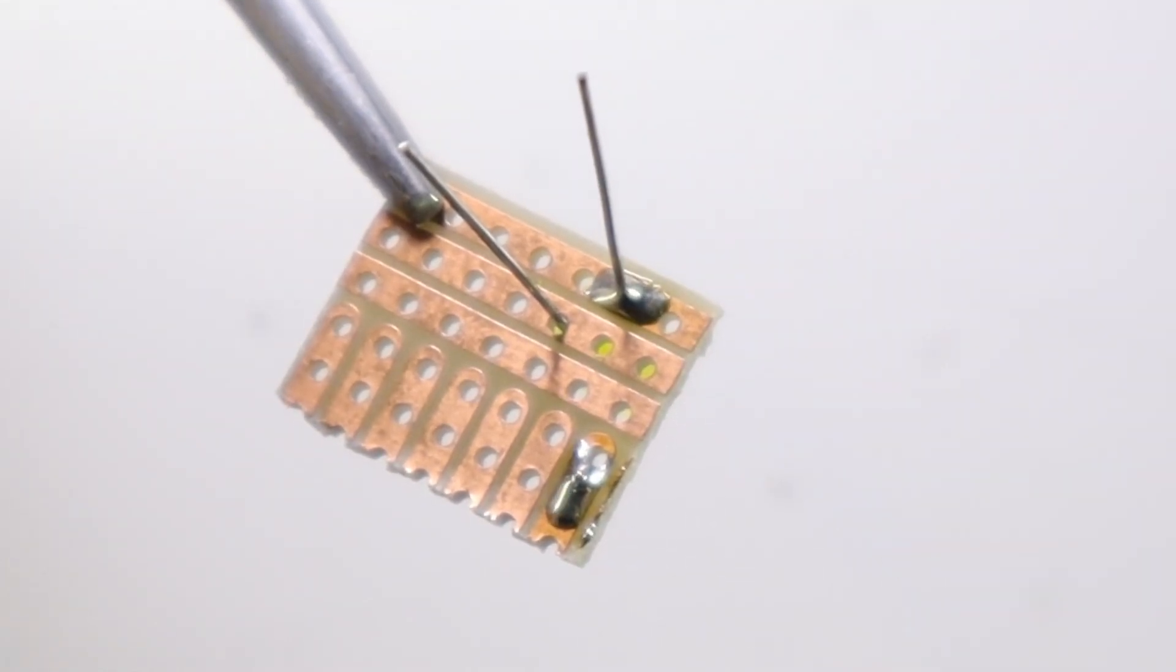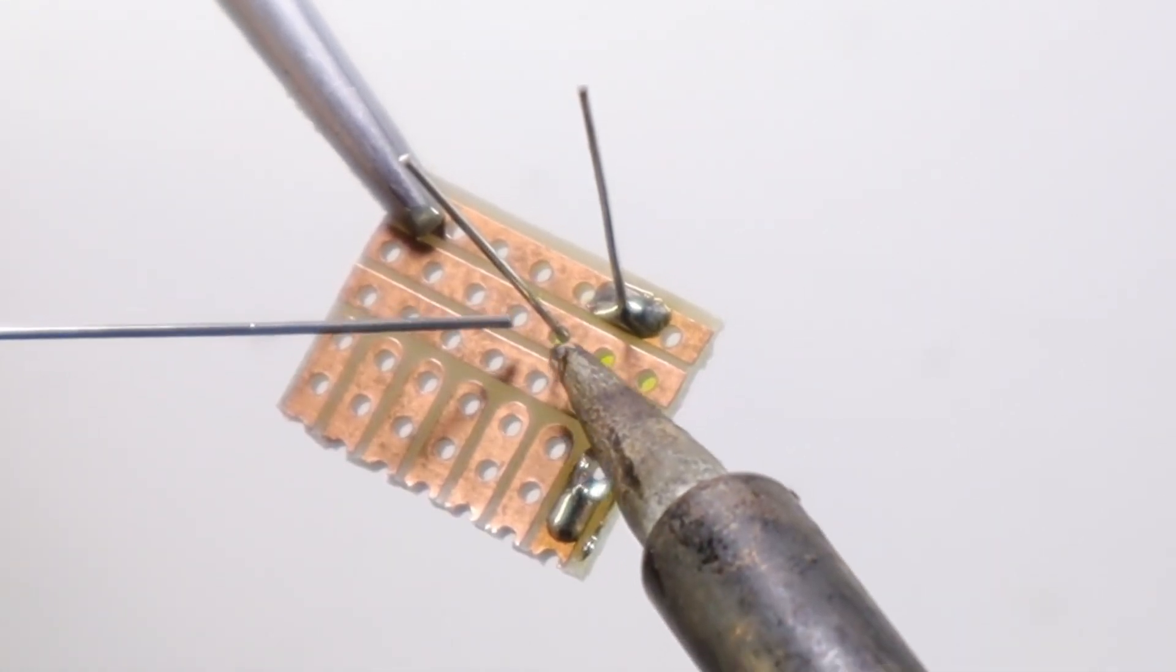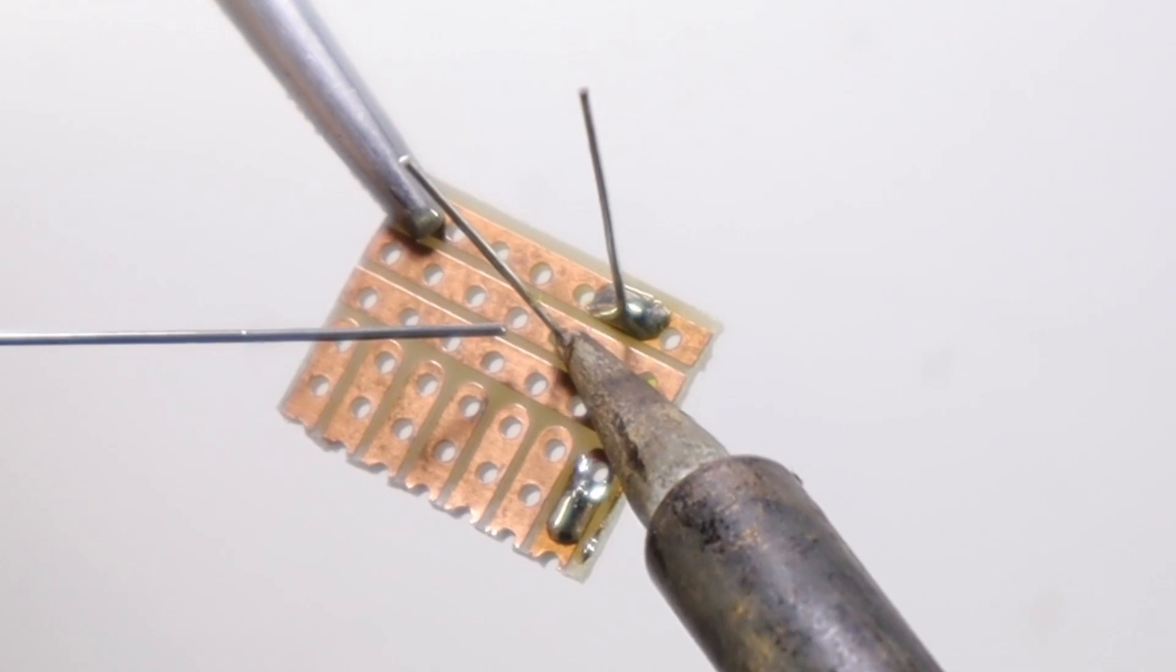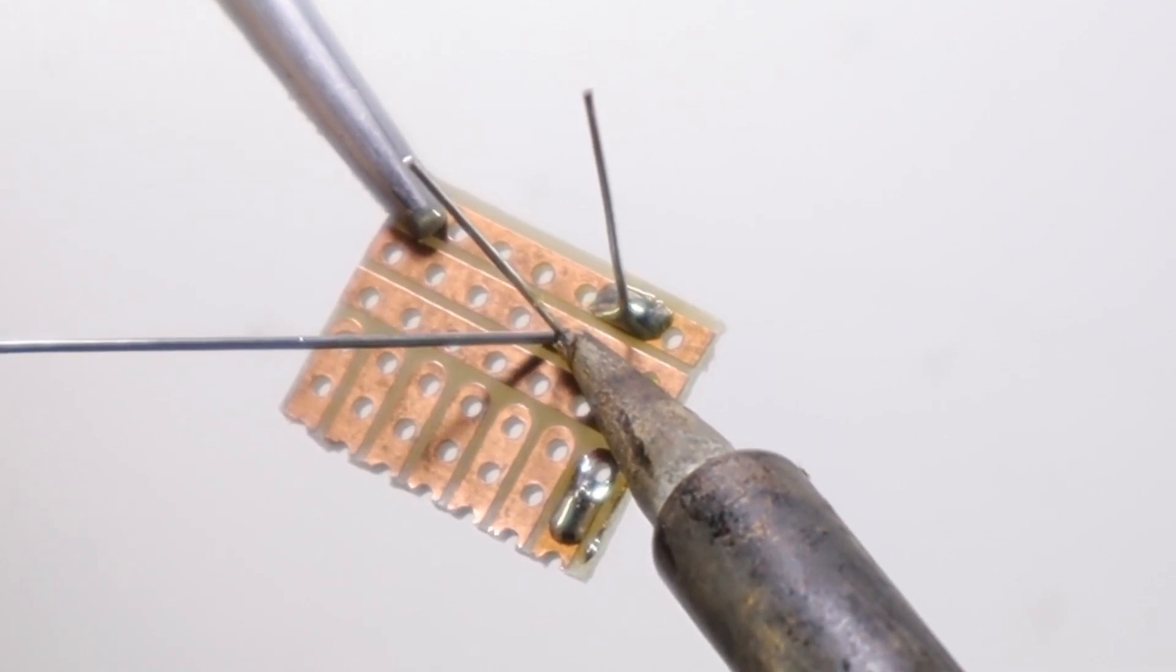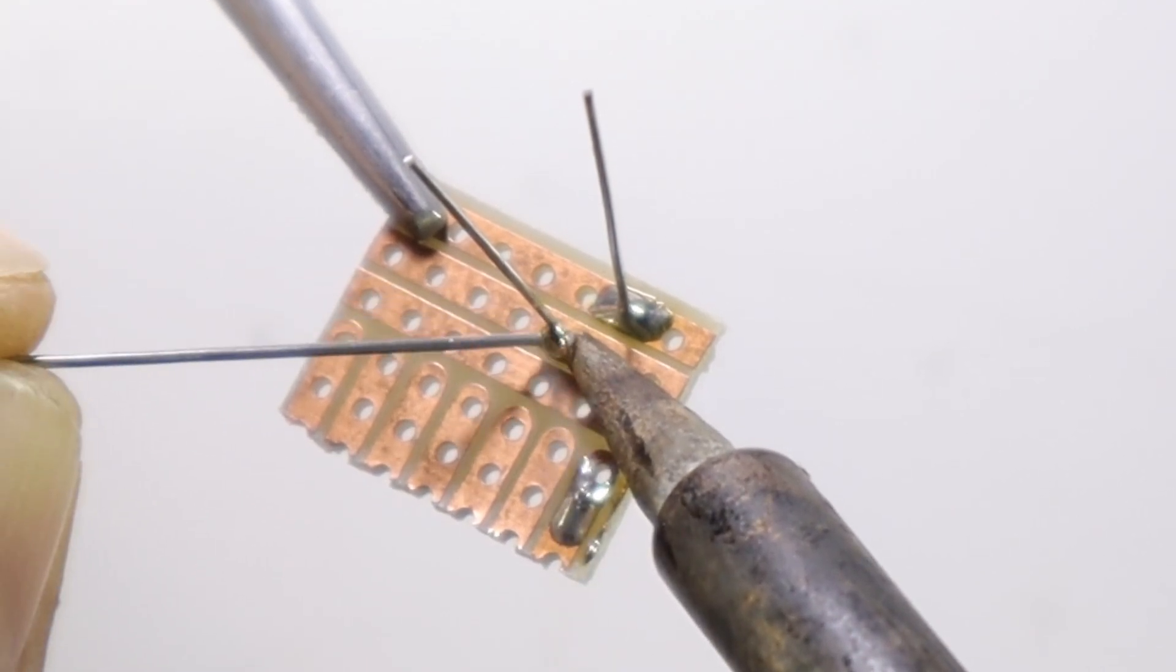A good joint is a joint that has a wet look and does not have too much solder on it. As soon as the temperature of the track and the component leg is correct, you will see that the solder will easily flow and cover the whole area.